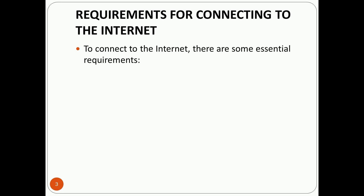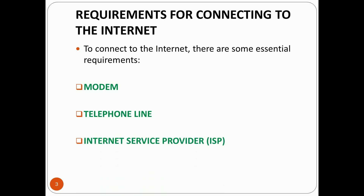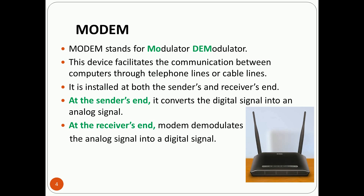Now we'll discuss the requirements for connecting to the internet. To connect to the internet, there are some essential requirements: first is modem, second is telephone line, and the third is internet service provider, or ISP in short.